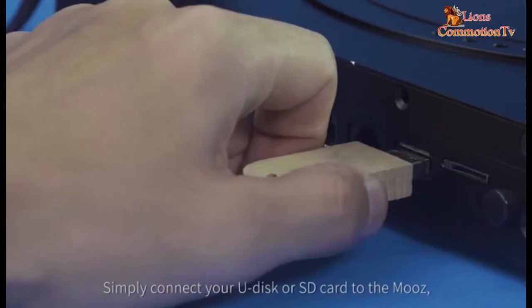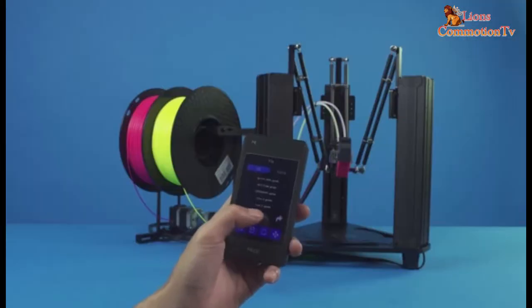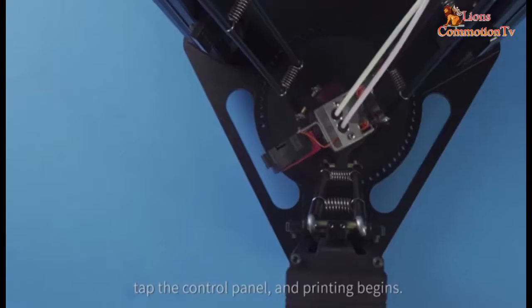Simply connect your USB or SD card to the Moose, tap the control panel, and printing begins.